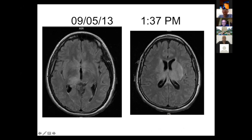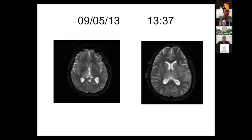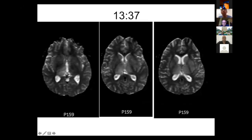Twelve hours after symptom onset, the MRI showed hypersignal in the bilateral thalamus, with some changes also in the corpus callosum and the caudate. On the perfusion MRI, there is hypersignal in the posterior thalamus and both thalami. Only these changes were present. Another diffusion sequence showed similar changes.